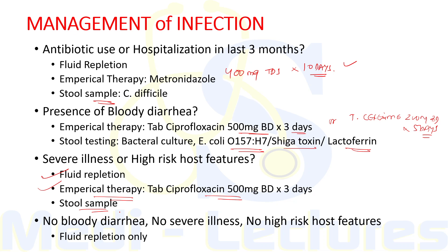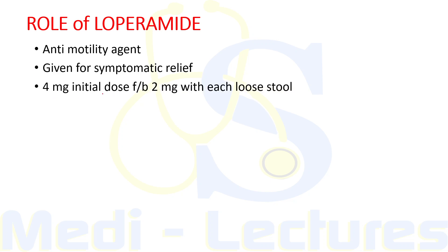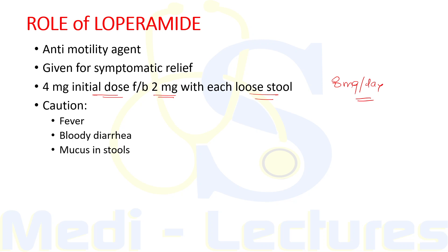Loperamide is an anti-motility agent that can be given for symptomatic relief. The dose is 4 mg initially, followed by 2 mg with each loose stool episode, with a maximum of 8 mg in 24 hours. Caution: this drug must be avoided if there is evidence of fever, bloody diarrhea, or mucus in stools unless antibiotics are also being given, as loperamide without antibiotic coverage in these conditions can lead to increased proliferation of pathogenic bacteria in the gut.